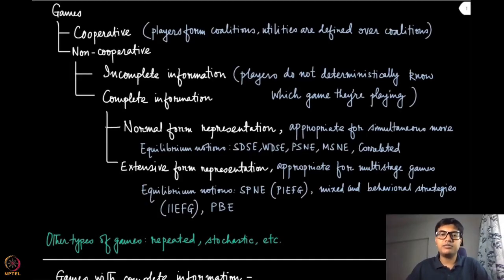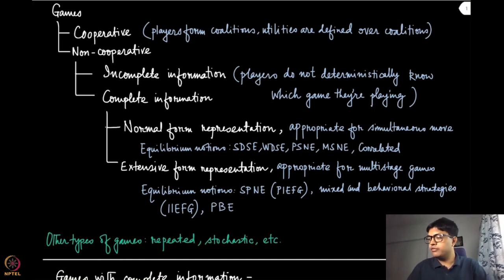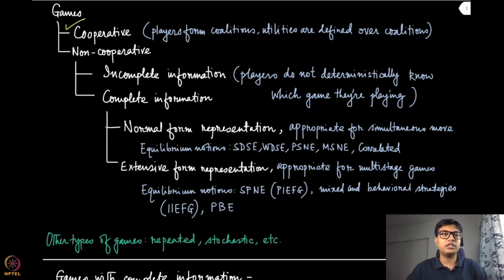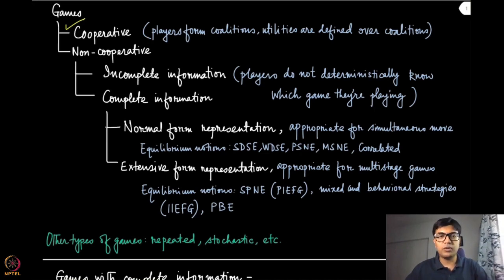So far we have discussed different kinds of games, so it might be a good time to stop and look back at what we have discussed. Games broadly can be divided into two types: non-cooperative games and cooperative games. We haven't discussed anything about cooperative games and will not do so in this course. In cooperative games, utilities are defined not only on individual players but also on coalitions — collections of individuals. In this course we are going to focus only on non-cooperative games.